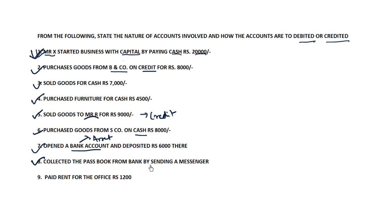The eighth event: collected the passbook from the bank by sending a messenger. This transaction does not involve any monetary value. Under the money measurement concept, any event that cannot be measured in terms of money is not recorded in accounts. Since the collection of the passbook has no monetary involvement, there will be no journal entry for this.